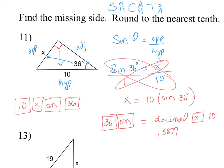And when we multiply that times 10, we do get a length of 5.87. So that is the length of the opposite side of our triangle that has a 36 degree angle.